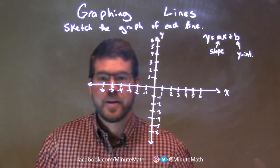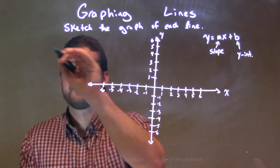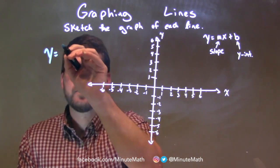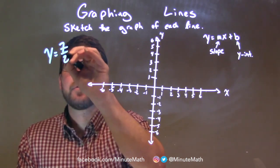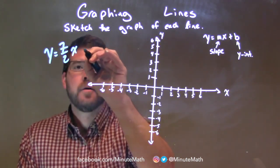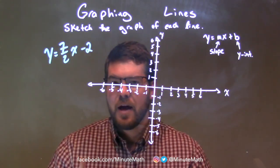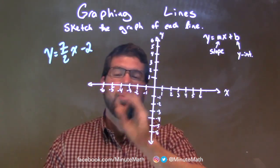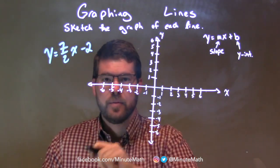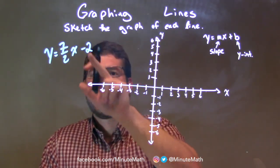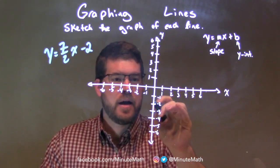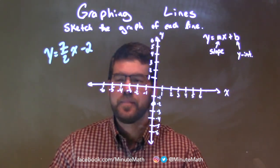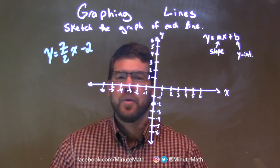So if I was given this equation, y equals 7 halves x minus 2. The first thing I'm looking at here is our b-value, our y-intercept — where it crosses the y-axis. We have a negative 2 right there. So across the y-axis, I have a negative 2. And now we have one point. Two points make a line, so we need to get a second point.